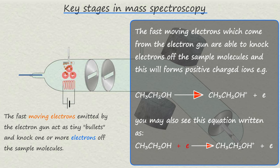In the second equation the electron shown in red is the electron from the electron gun so depending on which type of book or textbook you are using you may see one or perhaps both of these equations shown.